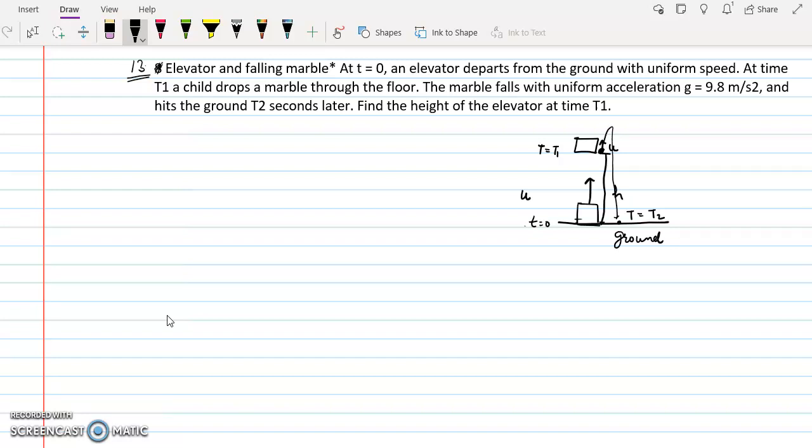So we have to find the height h of the elevator at time t1. This height will be equal to the displacement of the stone. We will use the formula for finding the height: s = ut + (1/2)at².